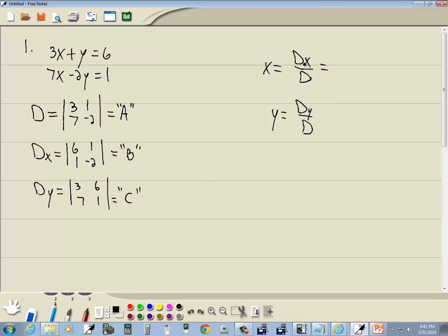So x is going to be determinant of B over D, which we said we're going to put into A. And y will be the determinant of C over the determinant of A.